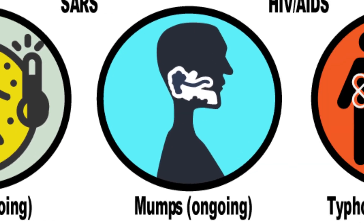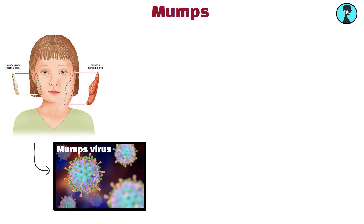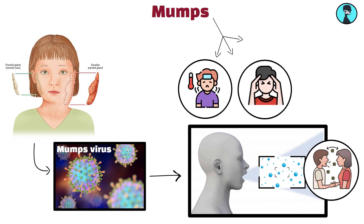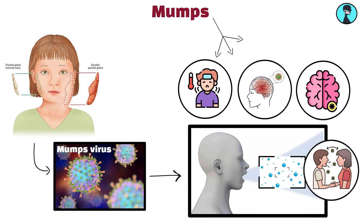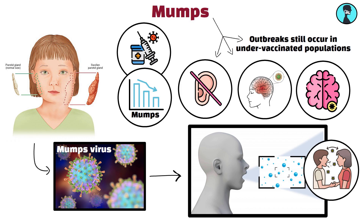Mumps, ongoing. Mumps is a viral infection caused by the mumps virus. Transmitted through respiratory droplets or contact with infected saliva, mumps causes fever, headache, and painful swelling of the salivary glands. Complications can include meningitis, encephalitis, and deafness. Widespread vaccination has greatly reduced the incidence of mumps, but outbreaks still occur in under-vaccinated populations.